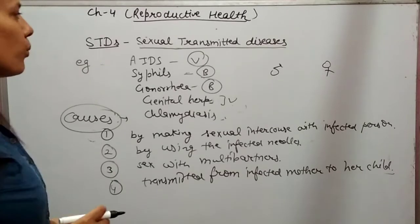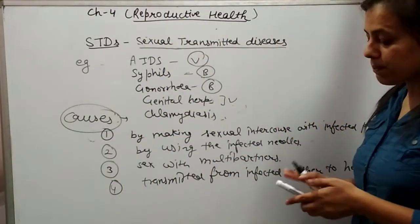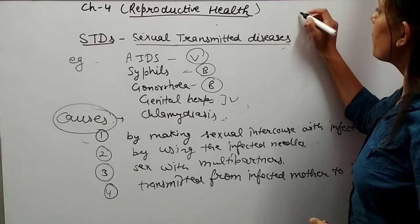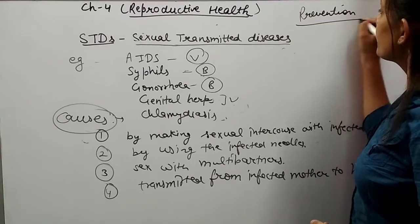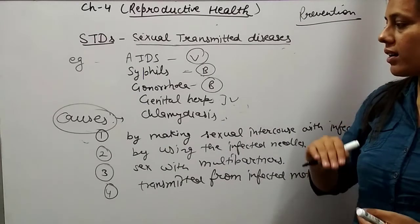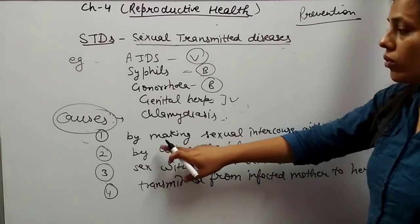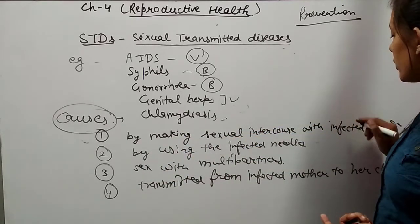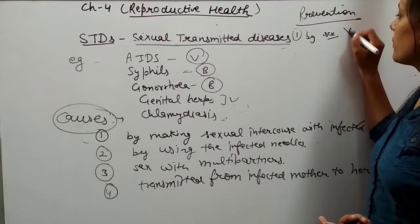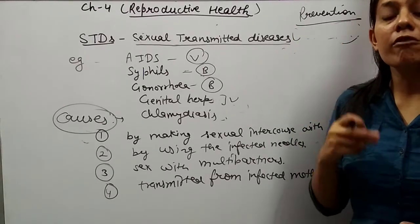What are the methods by which STDs can be prevented? As you know the causes of STDs, by becoming aware of those causes, prevention can be taken. Since STDs may occur by making sexual intercourse with an infected person, by preventing sexual intercourse with an infected person — or during sexual intercourse, some protective measures should be used.